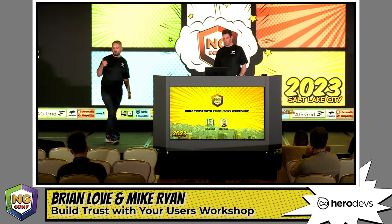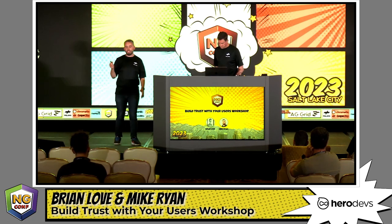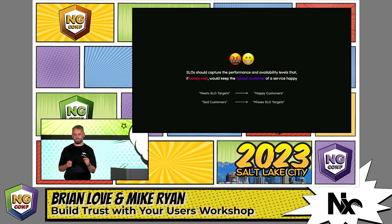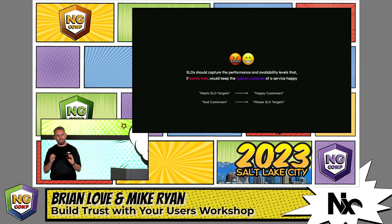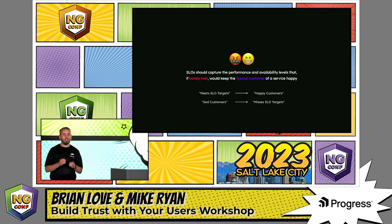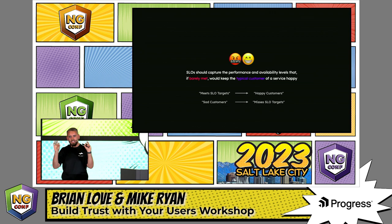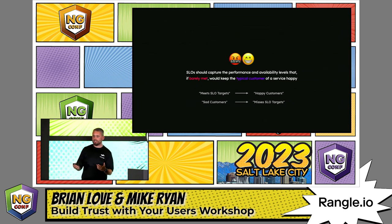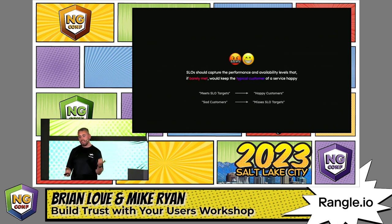We have a simple rule of thumb for where SLO targets should be. A typical user of your service should be just about happy with the service when it operates to those targets — if it were any less reliable, they would be unhappy. The SLO is that fine line between smiling when using your app and feeling a little frustrated. The challenge is quantifying and measuring that happiness, because monitoring it directly tends to require invasive methods we don't want to use.